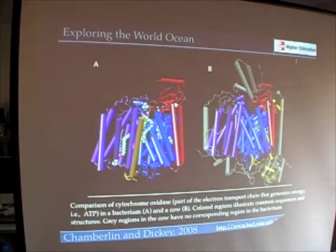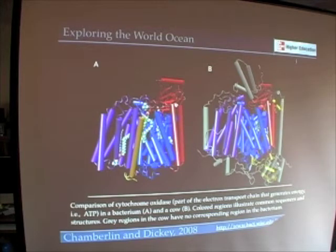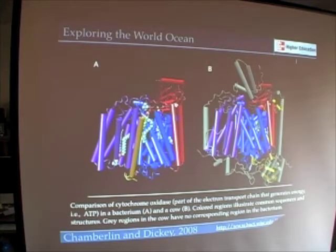It's part of an electron transport chain that generates adenosine triphosphate. Take a look at the similarities with this same cytochrome oxidase enzyme in a cow. The colored parts are the regions of the molecule that they have in common, while the gray areas are things that the cow has added on to its molecule.